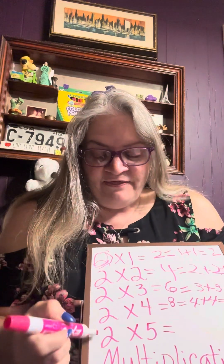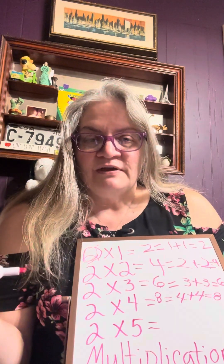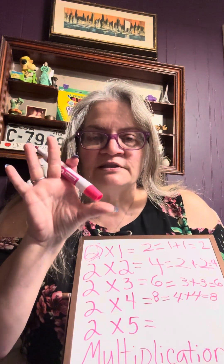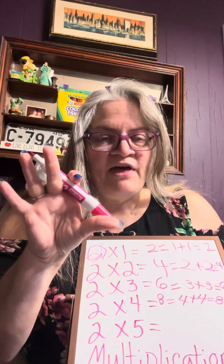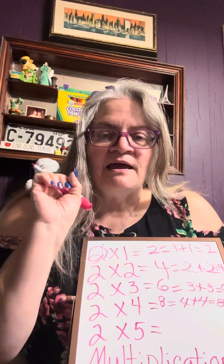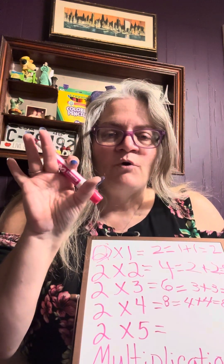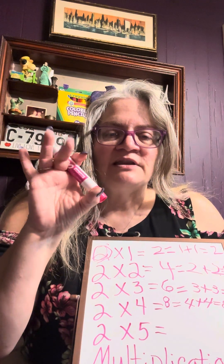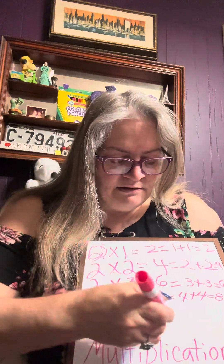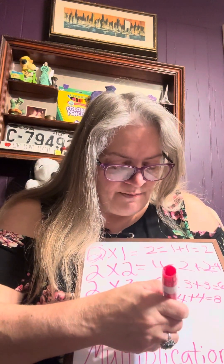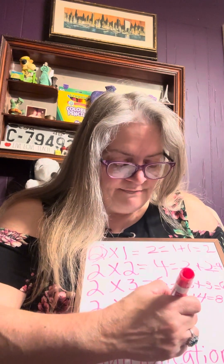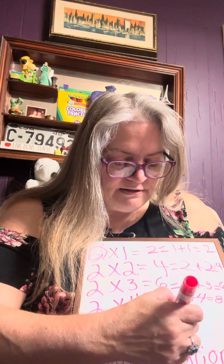Anything times one is itself. Two times five is two fives — it's ten. If you hold up all your fingers, this is one five; one more of that is ten. One, two, three, four, five, six, seven, eight, nine, ten — that's two fives, five plus five equals ten.